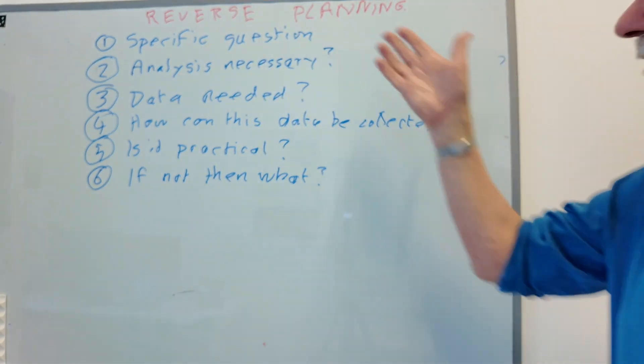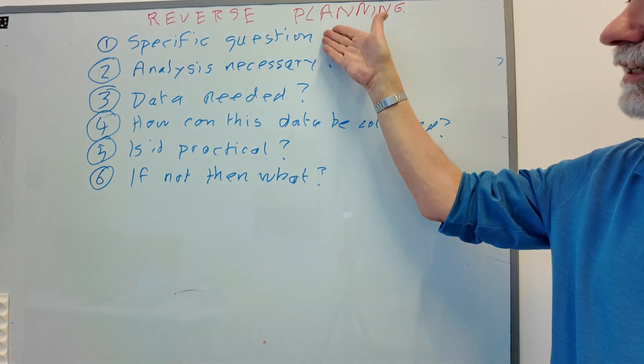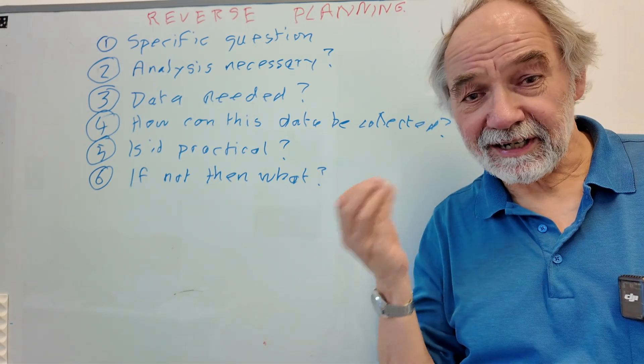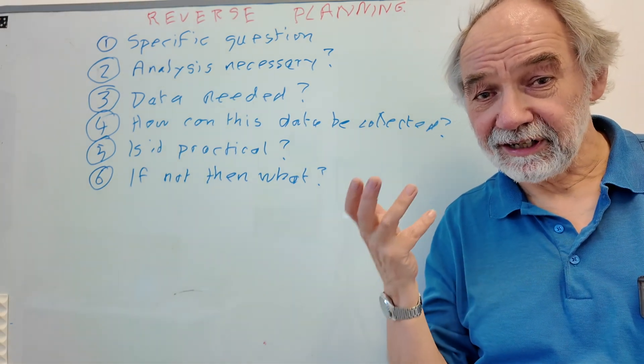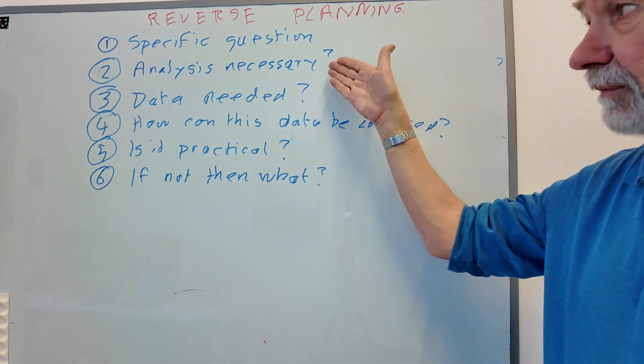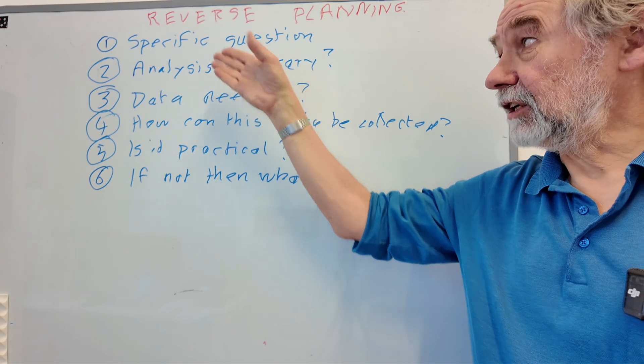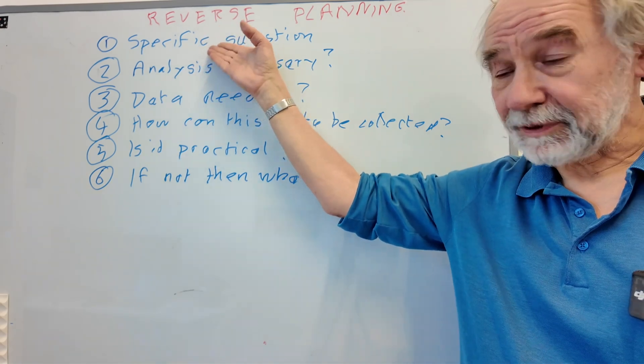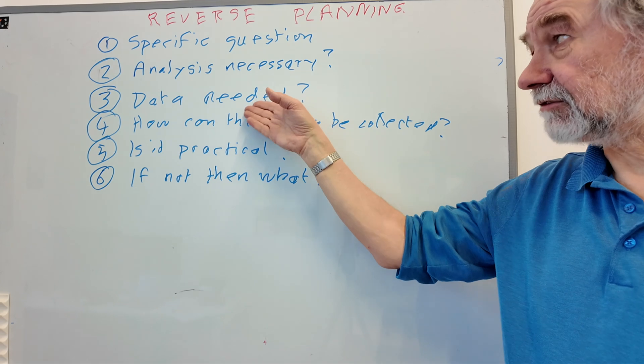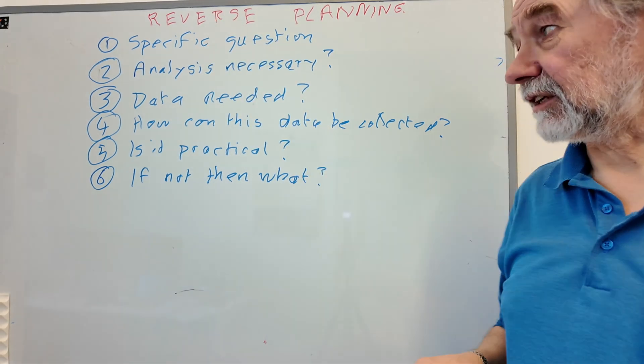So this is the process of reverse planning we think about. Firstly, what's the specific question you want to answer that's interesting and important? And that is a difficult stage. Secondly, what analyses do you need in order to answer that specific question? Thirdly, what data is needed to create those analyses to answer that question?